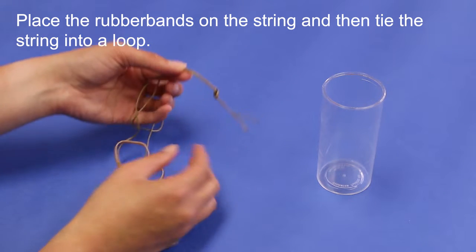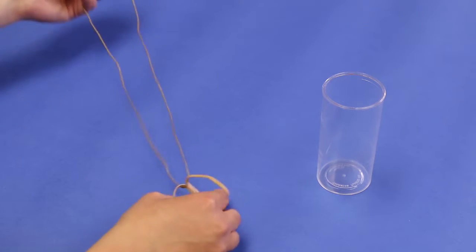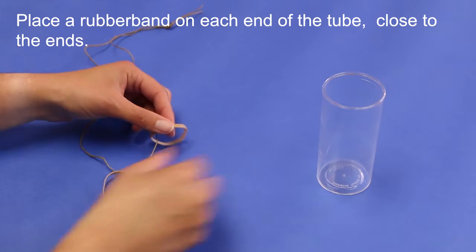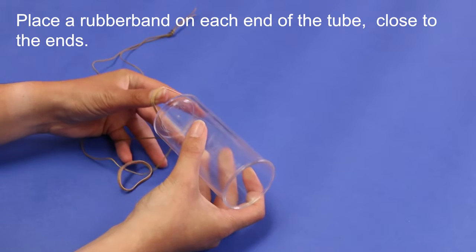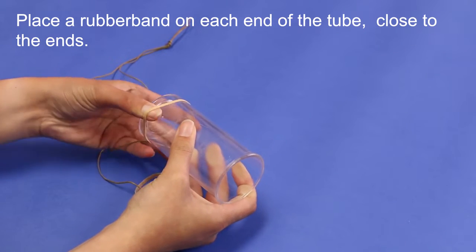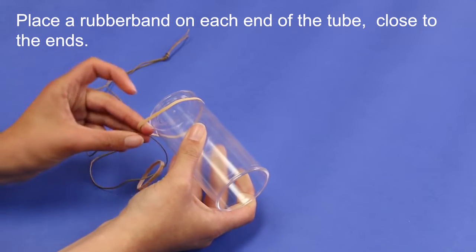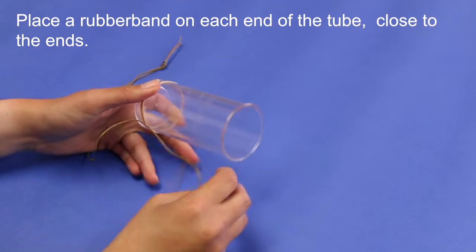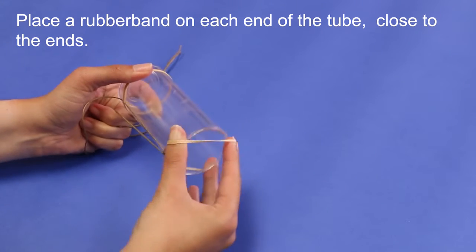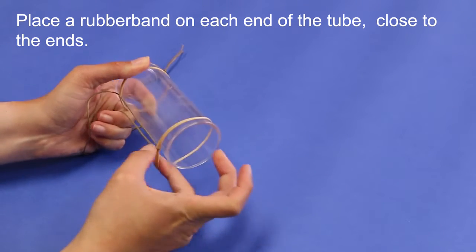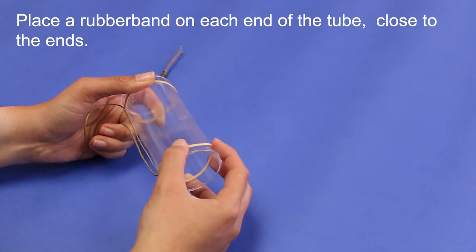Once you have your loop string, you're going to place the rubber bands onto the tube. Start by taking one rubber band and placing it over one end of the tube. It should be placed close to the edge. Then take the other rubber band and do the same thing at the other end of the tube. The exact placement is not important.